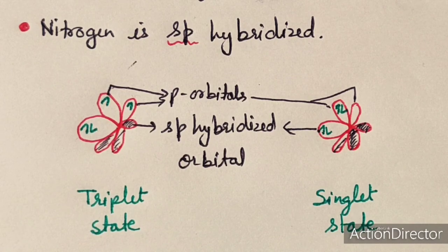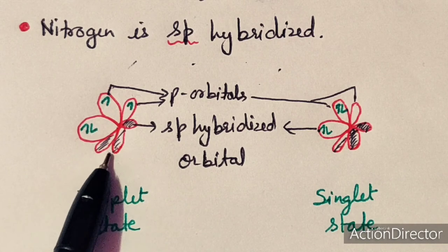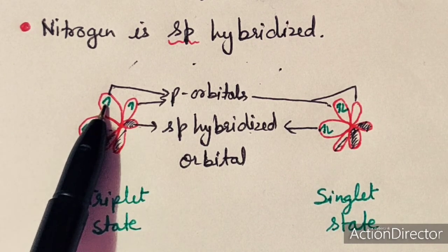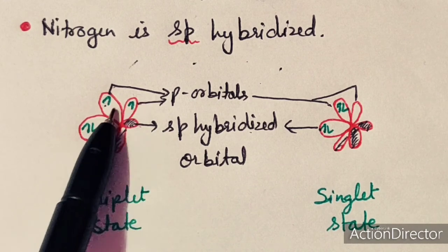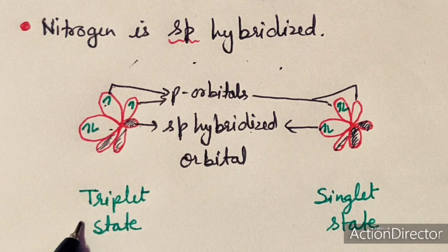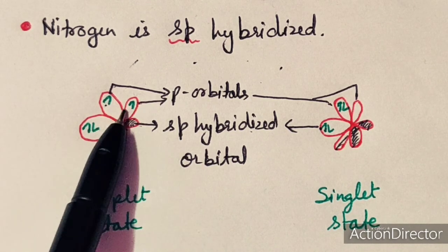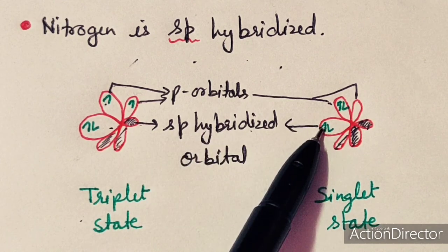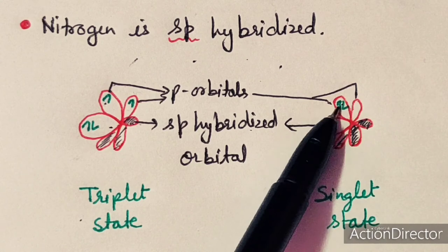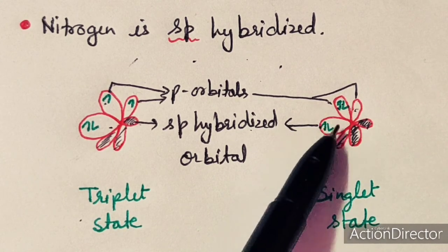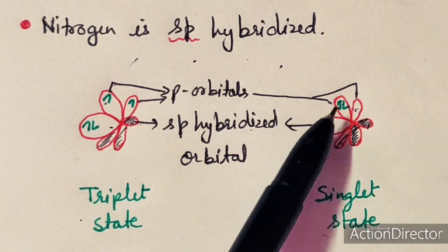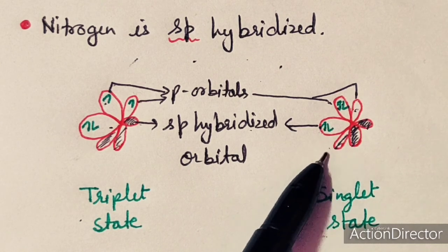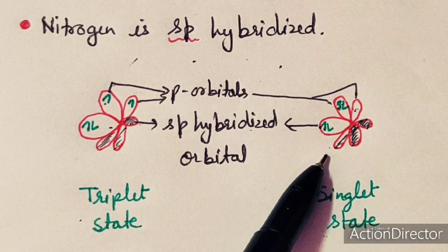In the imino free radical, nitrogen is sp hybridized. The lone pair of electrons is present in the sp hybridized orbital, while the unpaired electrons are present in the two p orbitals that are perpendicular to each other. This is the triplet state — a low energy state. In the high energy state, one electron pair is present in the sp hybridized orbital while one pair is in one p orbital and the other p orbital remains empty. This is a singlet state because there is no unpaired electron; S equals 0, so multiplicity becomes 1.